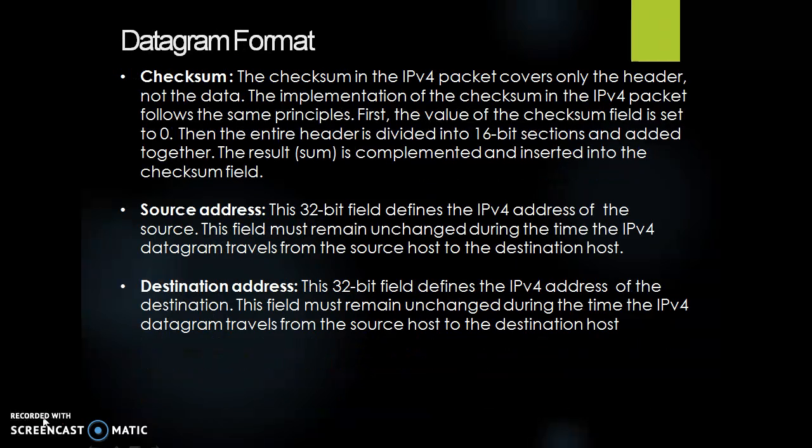Next is checksum. The checksum in the IPv4 packet covers only the header, not the data. The implementation of the checksum in the IPv4 packet follows the same principles. First, the value of the checksum field is set to 0. Then the entire header is divided into 16-bit sections and added together. The result is complemented and inserted into the checksum field.